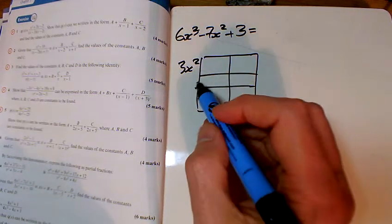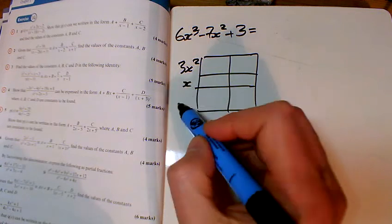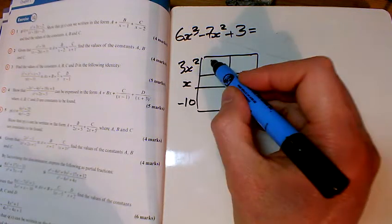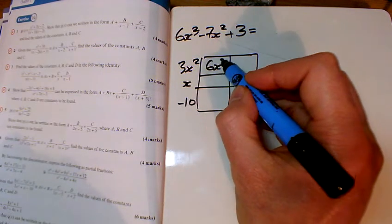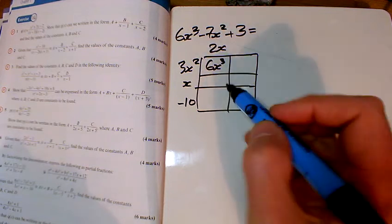I'm dividing by 3x² + x - 10. What I want is 6x³ here, so clearly I want 2x to start with.